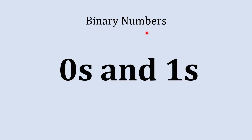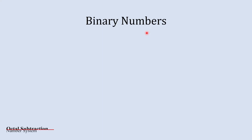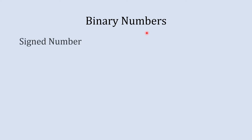In the binary number system everything revolves around zeros and ones, but when it comes to representing negative numbers things get tricky. So basically in binary numbers there are two types of numbers: there are signed binary numbers and there are unsigned binary numbers.